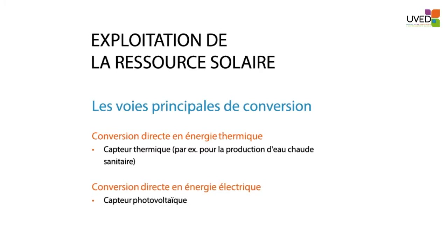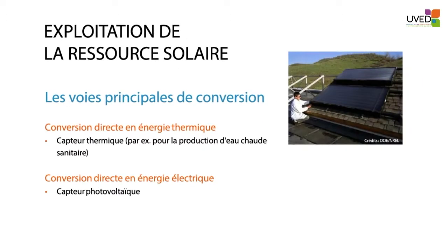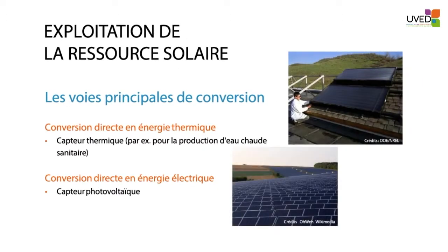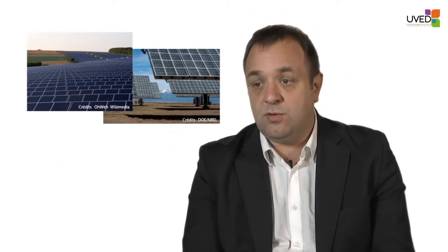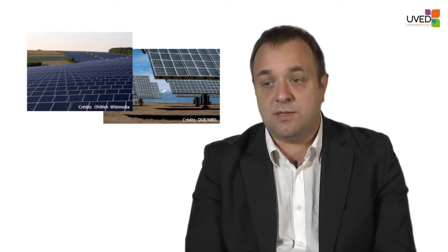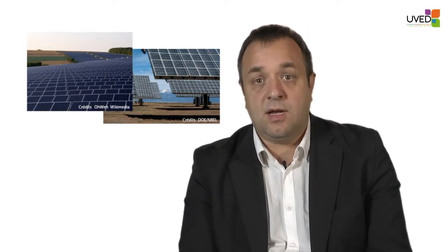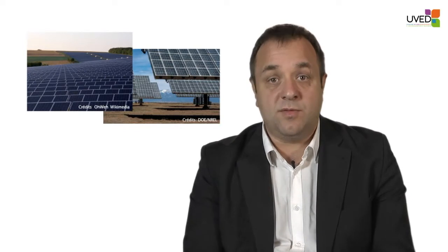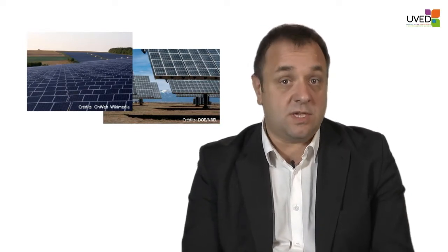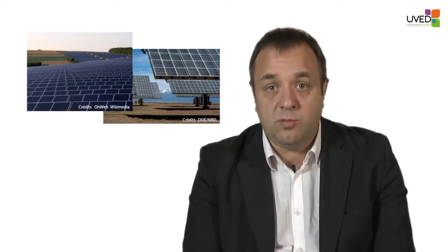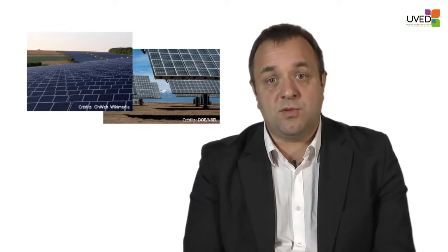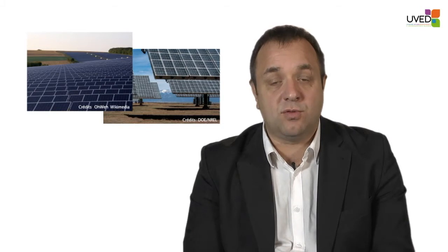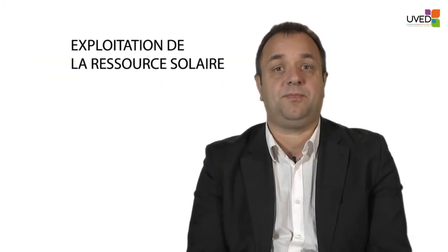For instance, we have solar boilers to create hot water for houses. There is also another conversion option: the conversion into electrical power with the photovoltaic method. The two pictures here show you solar farms — on the left-hand side, a conventional solar farm with fixed chassis found in Europe, and on the right-hand side a solar farm where the panels turn and follow the Sun.